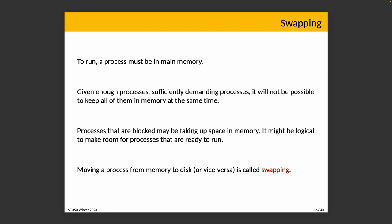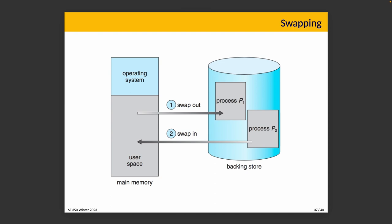Let's talk about swapping. To run, a process has to be in memory, and given enough processes or sufficiently demanding ones, it won't be possible to keep them all in memory at the same time. A blocked process takes up memory, but it may be logical to make room for processes that are currently ready to run. Moving a process from memory to disk or vice versa is called swapping. Main memory has some dedicated to the OS kernel, but the OS can move other processes in and out. Swapping out moves data to the backing store (the hard disk), and swapping in brings it back to memory.